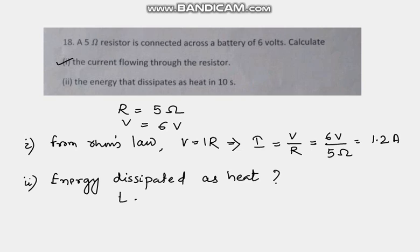So now from the equation H is equal to I square R t. From where did this equation come? This equation is from Joule's law of heating. I is the current and R is the resistance of the conductor, and t is the time for which the current flows.